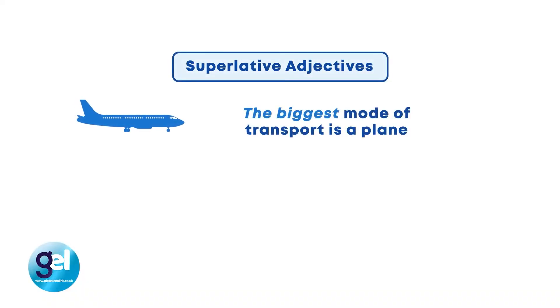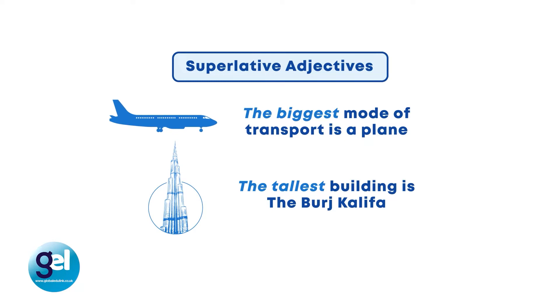Let's now focus on superlative adjectives. We use them to compare more than two things or people. The biggest mode of transport is a plane — the biggest is an example of the superlative. The tallest building is the Burj Khalifa. Grammatically, we add the in front of the superlative adjective and we add -est to the adjective. When we use longer adjectives the rule changes — we say the most expensive, not the most expensive-ist. So modern becomes the most modern and expensive becomes the most expensive.